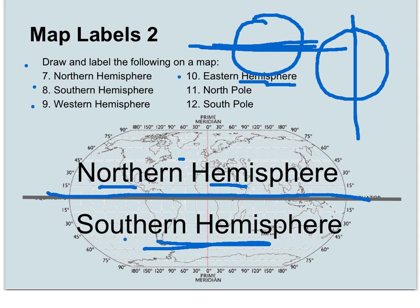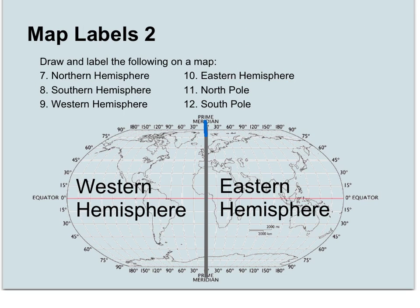Okay, what if we were to cut it right along the prime meridian straight up and down like this? We would get two different halves. We would get the western hemisphere and the eastern hemisphere.